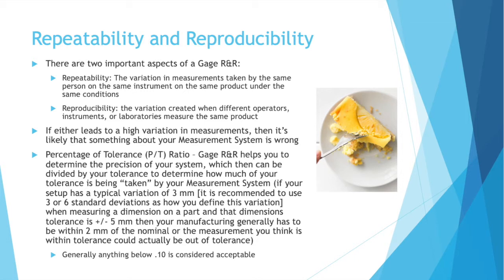Repeatability is the variation in measurements taken by the same instrument on the same product under the same conditions. Reproducibility is the variation created when different operators, instruments, or laboratories measure the same product. If either leads to high variation, something about your measurement system is likely wrong. Another important value is the percentage of tolerance ratio, or PT ratio. Gauge R&R helps you determine the precision of your system, which can then be divided by your tolerance to determine how much of the tolerance is being consumed by your measurement system.